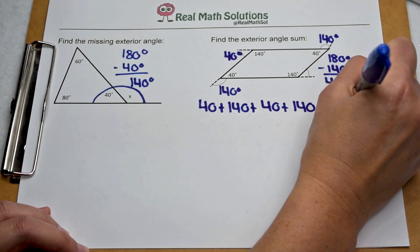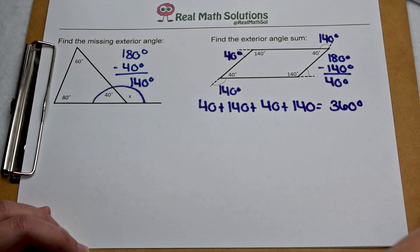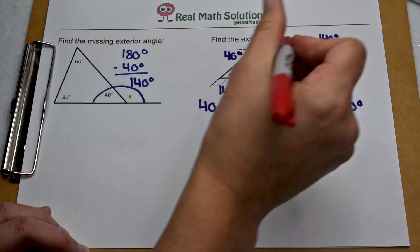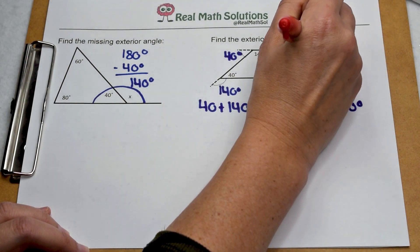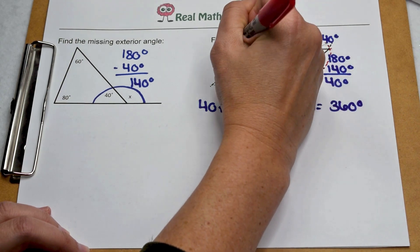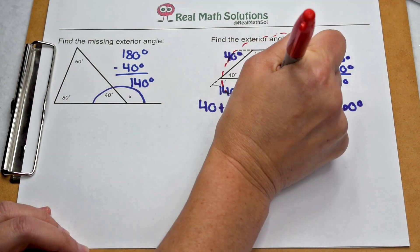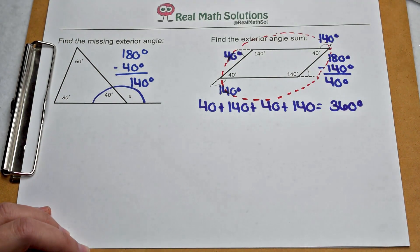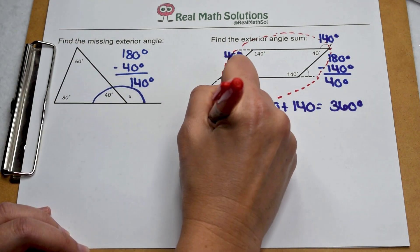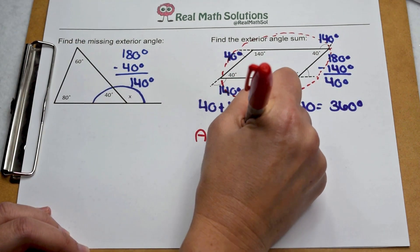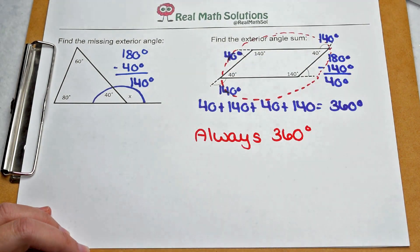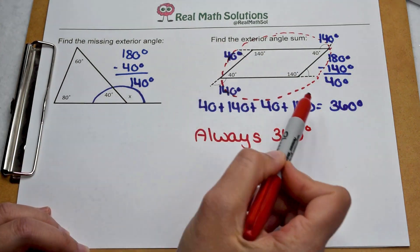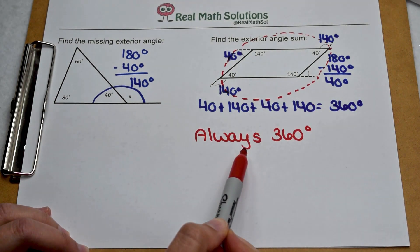Now there's a shorter way we could have gone about doing that. We've talked about how when we combine all of our exterior angles and rotate through all of them, we come all the way around the figure to form a complete circle. We know a circle is worth 360 degrees. So no matter what polygon we're working with, the exterior angle sum is always going to be 360. So instead of finding them all and adding them up, we simply could have gone with that fact.